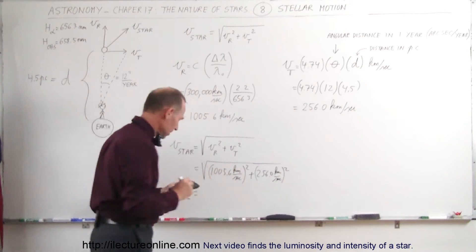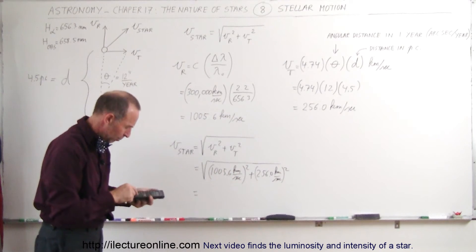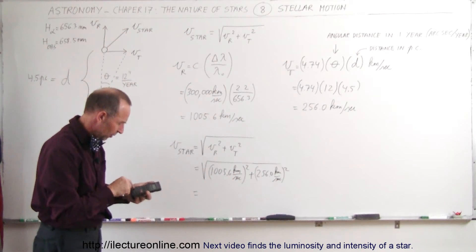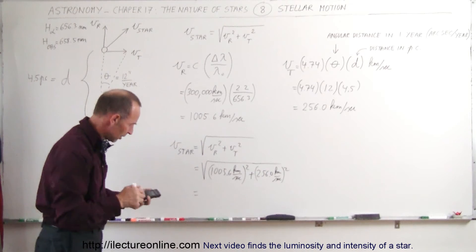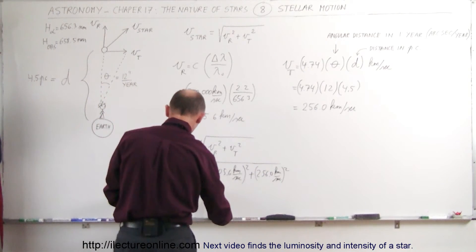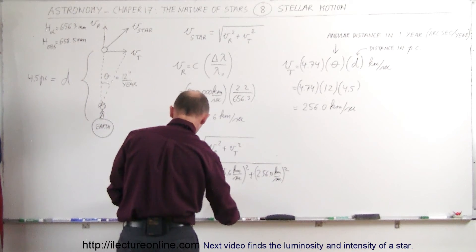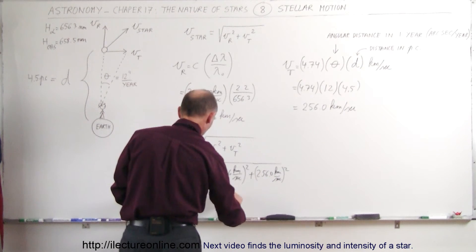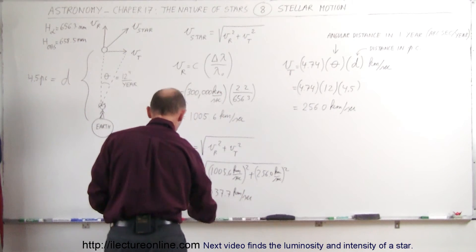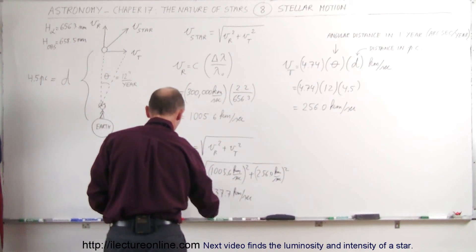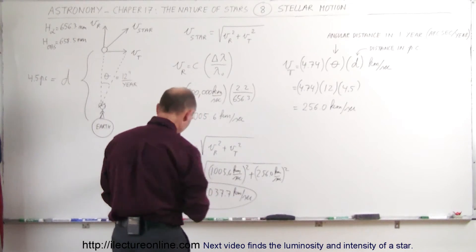And so finally, if we square that plus 1,005.6 squared, take the square root, and we find that the total velocity of the star is 1,037.7 kilometers per second. That would be V of the star, and that's how we find it.